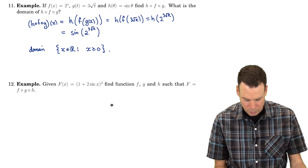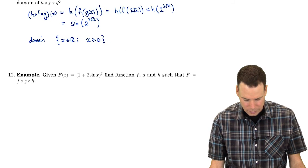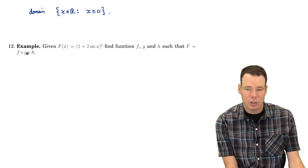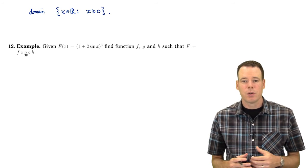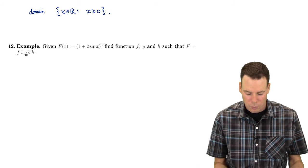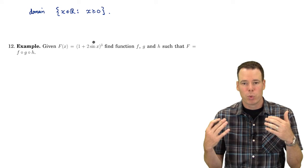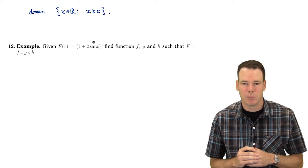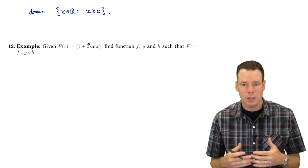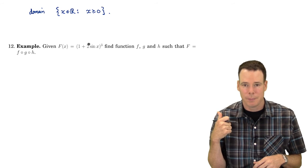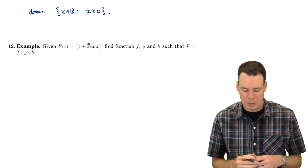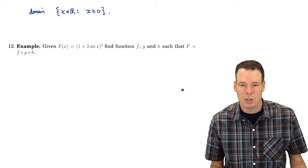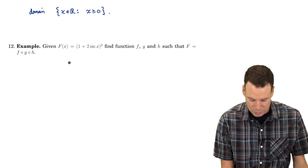In this last example, we're given a function and we want to decompose it into a composition. This is essentially what we'll do most in this course: start with complicated functions and break them down into their elementary pieces — figuring out how they're built up from simple functions like linear functions, power functions, and trig functions. Decomposition is really what we're going to be doing a lot of in this course.